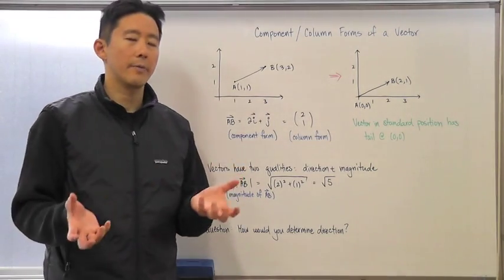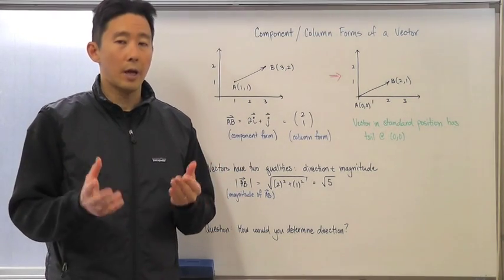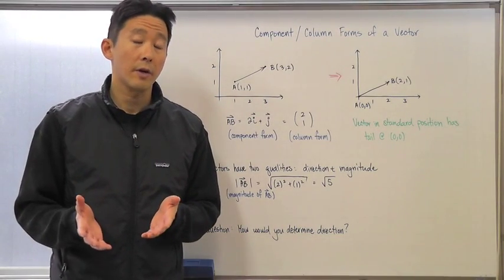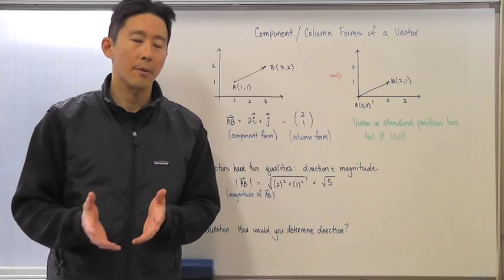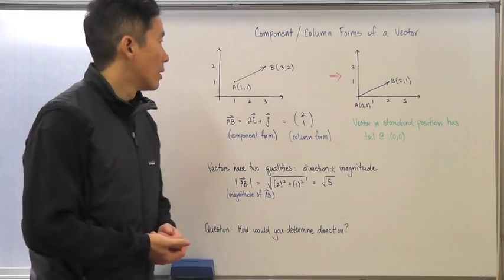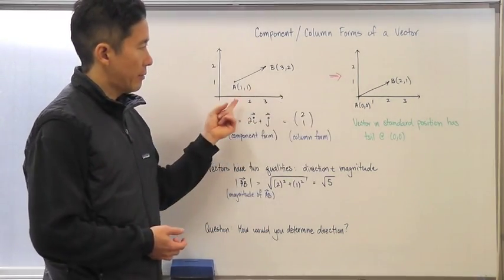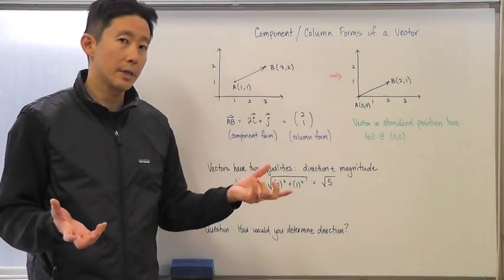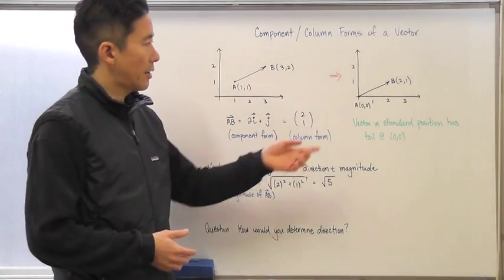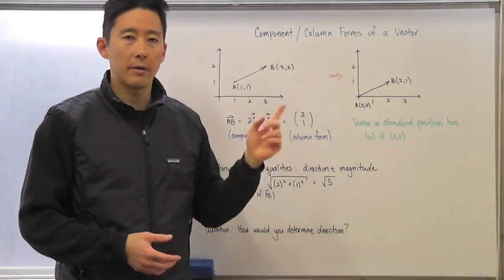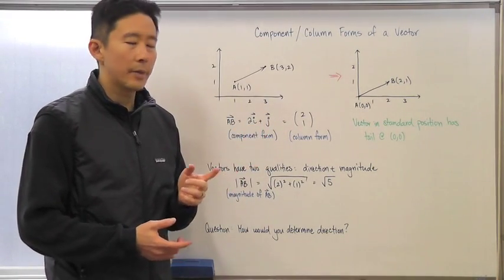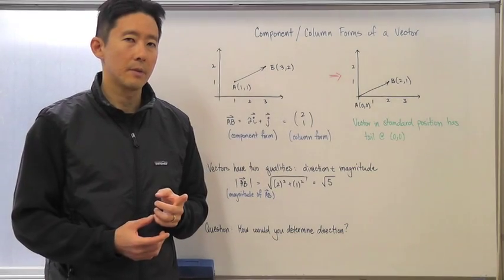Remember, with vectors, if you have two vectors that have the same direction and the same magnitude, you're talking about the same vector. Location doesn't matter — placement of the vector does not matter, so long as the magnitude and direction are the same. If we look at these two particular vectors, they're actually the same vector. The one with its starting point at the origin is called a vector in standard position.